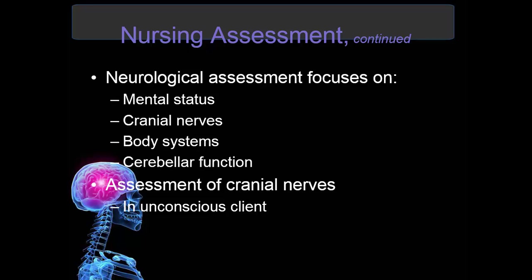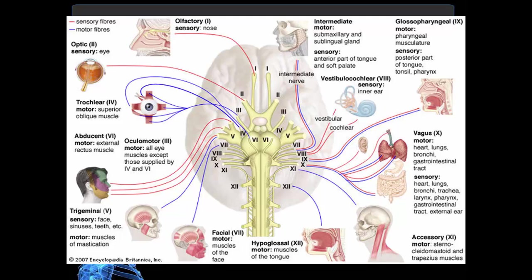The neurologic assessment also involves assessment of body systems and cerebral function. Assessment of cranial nerves in an unconscious patient is different from a conscious patient; page 706, table 11-5, shows how to perform cranial nerve assessment on an unconscious patient. The 12 cranial nerves are shown with their location in the brain and whether they are sensory, motor, or both — nerves that are both will have both the sensory and motor designations shown.